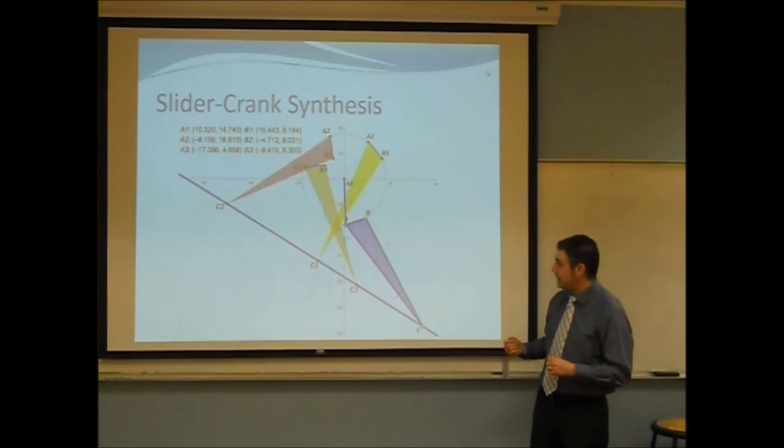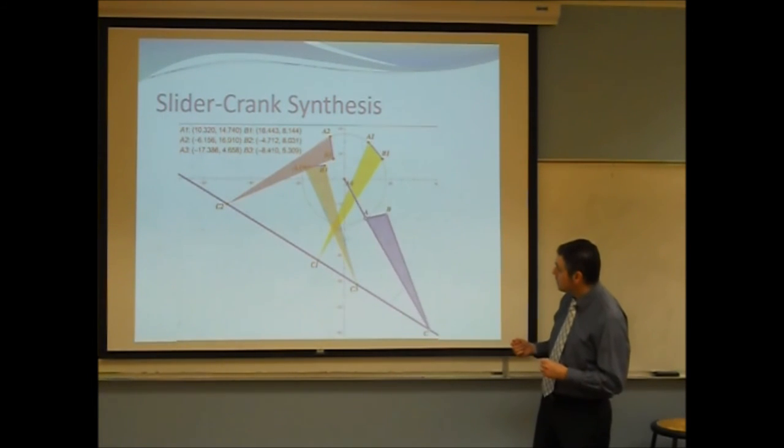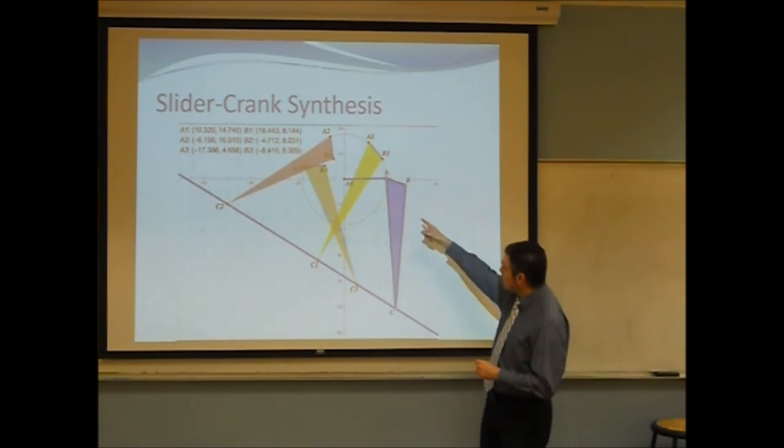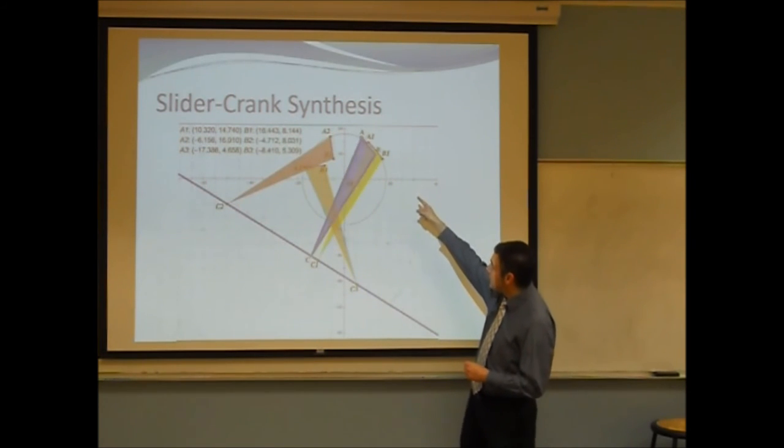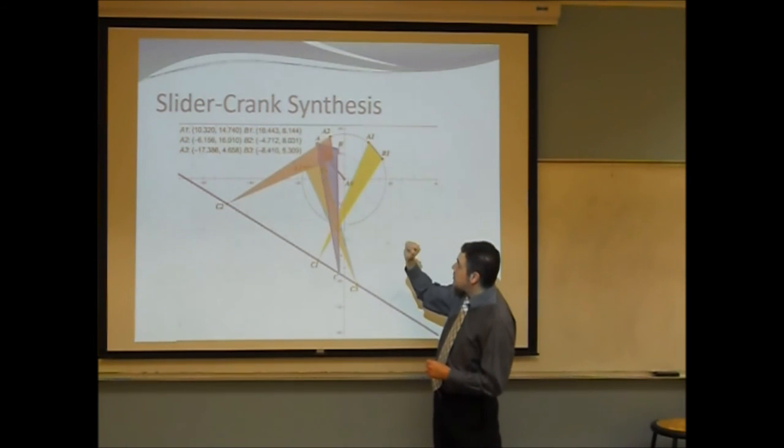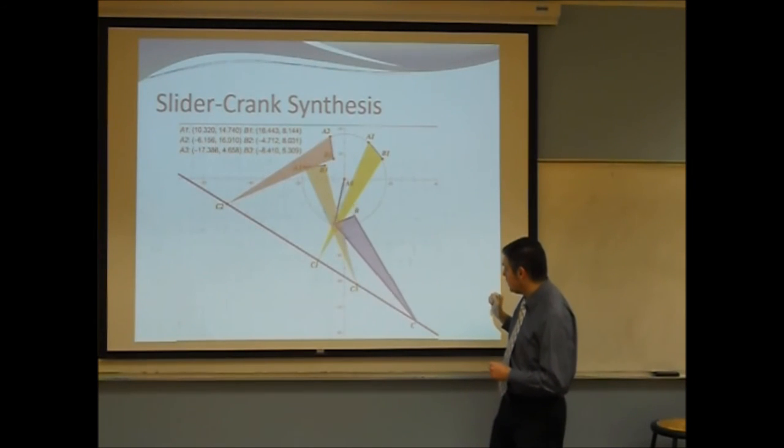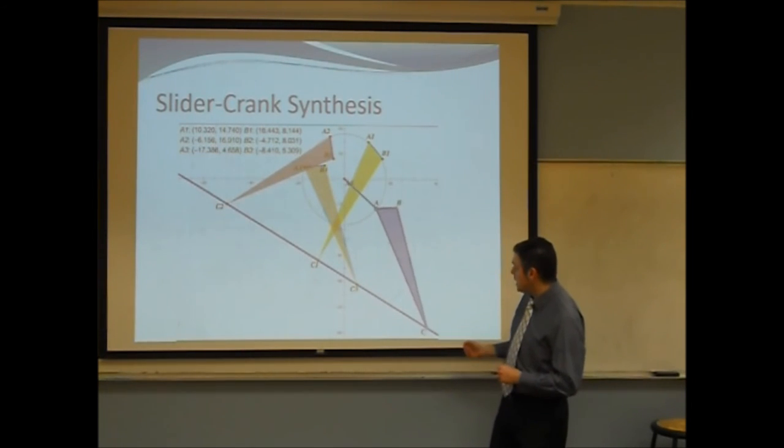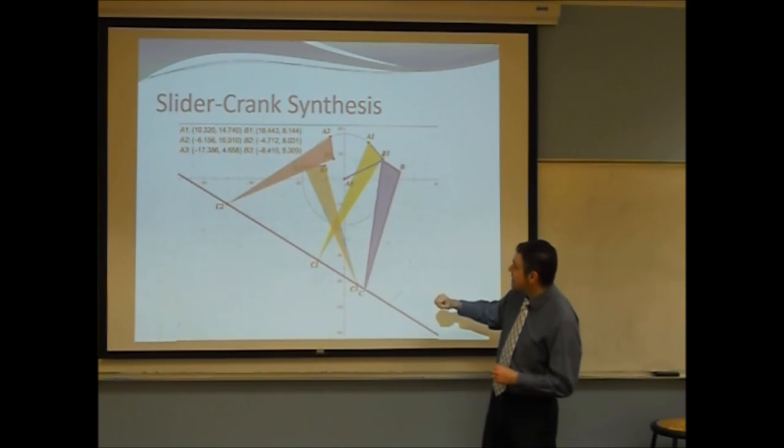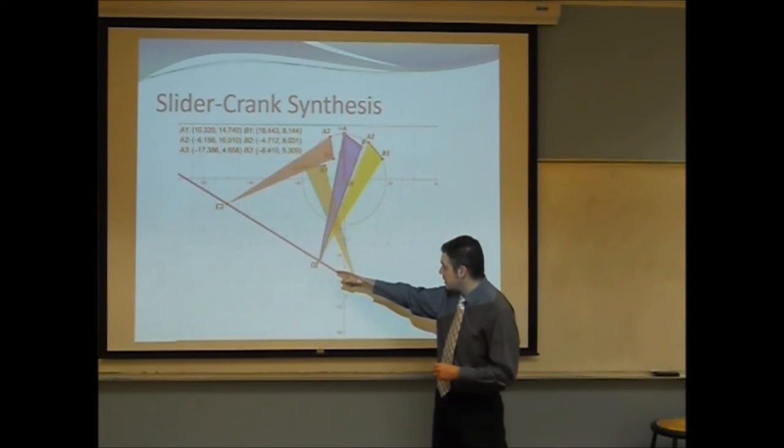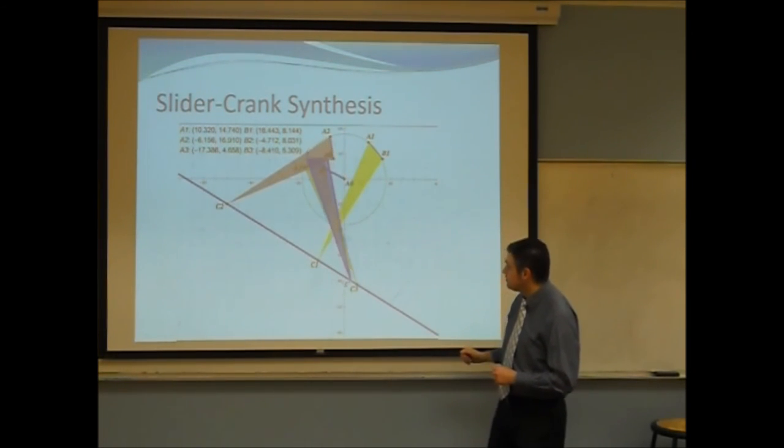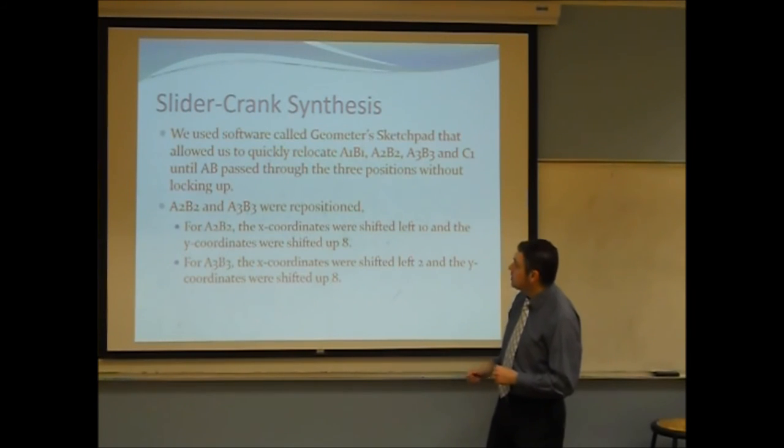We're going to see that here in the animation. You'll see we have the coupler. It does pass through A1 and B1. It then fails to pass through A2 and B2, but it does pass through A3 and B3. You'll notice that no lockup is happening here. Point C does stay on the slide the entire time.